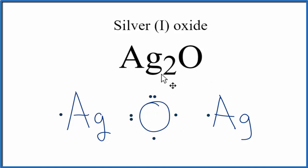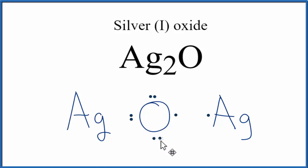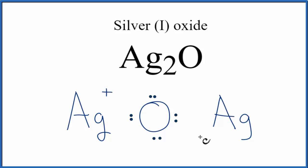So this is an ionic compound, and the metal will transfer electrons to the non-metal. The first Ag will transfer one electron to the Oxygen, and then the other Ag will transfer its electron over as well. When each Ag loses an electron, it loses a negative charge, so it becomes a 1+ charge. The Oxygen gained two electrons, which are negative, so now it has a 2− charge.